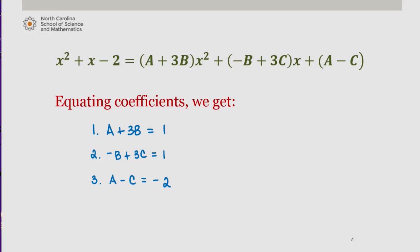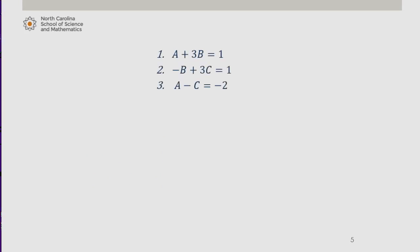So we have three equations and three unknowns. So we're going to use processes used to solve systems of equations to find A, B, and C. So here are our three equations. If I subtract equation 3 from equation 1, I see that I get 3B plus C. 1 minus negative 2 equals 3.